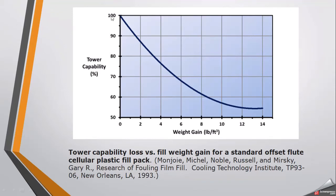A graph shows tower capability in percentage versus weight gain of the film fills. If there is no weight gain — that is, no scaling or deposits on the film fills — their efficiency is 100%. As the process continues, these fills gain weight through fouling and material deposits. As weight gain increases in pounds per cubic foot, efficiency goes down, reaching a lowest efficiency point at around 10 to 14 pounds per cubic foot. This shows how power capability loss corresponds to film weight gain for a standard offset fluted cellular plastic fill pack.